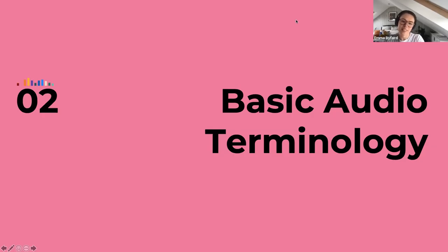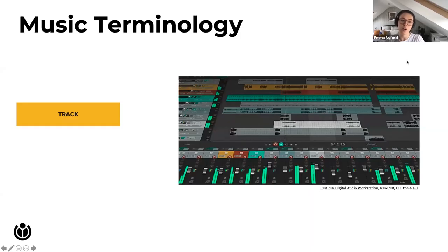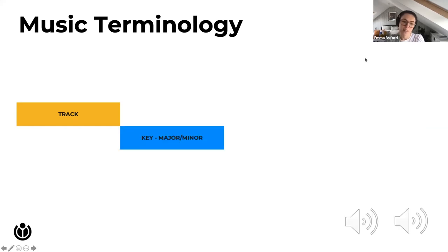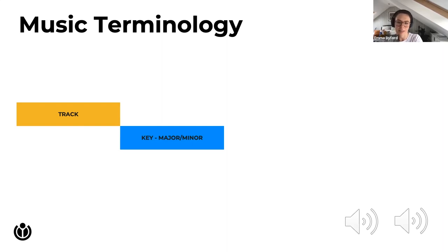Starting with basic audio terminology — the key terms you need before diving into music production. First, a track is simply a long-form piece of music, from a one-minute pop song to a symphony. Today we're focusing on sound logos, which are much shorter. Key, major and minor describe chords, scales and key signatures. The easiest way to understand the difference is through emotion: happy or bright music is often in a major key, while sad or melancholy music is in a minor key.